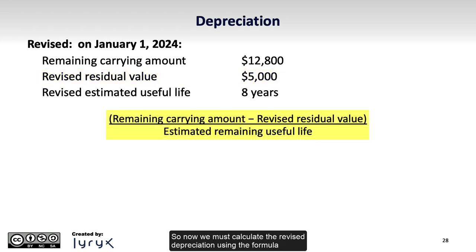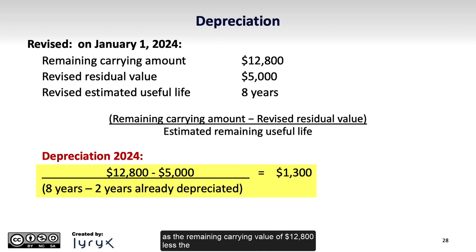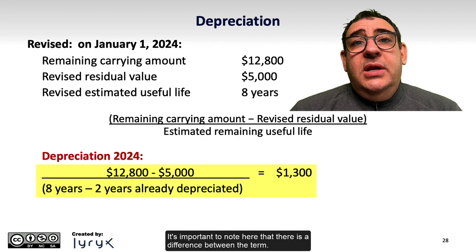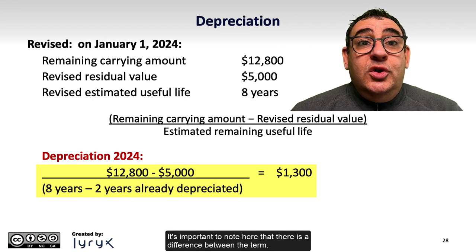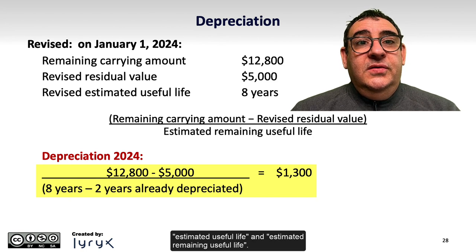So now we must calculate the revised depreciation using the formula as the remaining carrying value of $12,800 less the revised residual value of $5,000, divided by the remaining useful life of 6 years, calculated as the total 8-year useful life less the 2 years already in use. It's important to note here that there is a difference between the term estimated useful life and estimated remaining useful life.